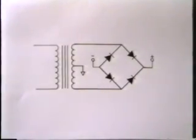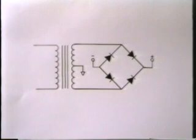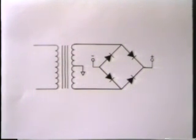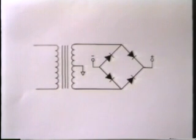This is a schematic diagram of the same split supply, but drawn in a different way. Does this look familiar? It's a bridge rectifier. Remember, you'll see bridge rectifiers drawn all kinds of different ways. In this case, the two diodes on the right are responsible for the positive power supply, and the two on the left for the negative power supply. Here's your clue for identifying a split power supply: anytime you see a bridge rectifier powered by a center tap transformer, you're looking at a split supply.